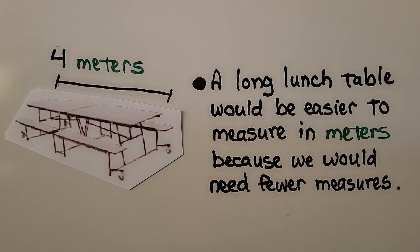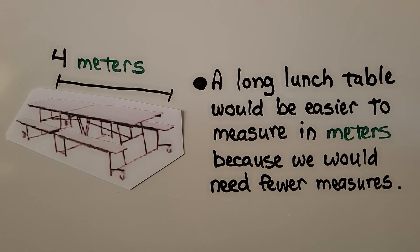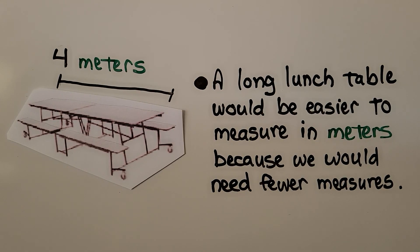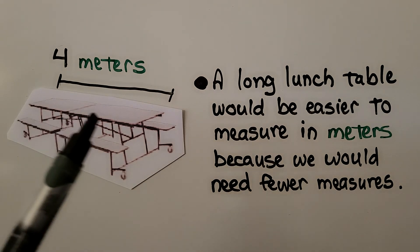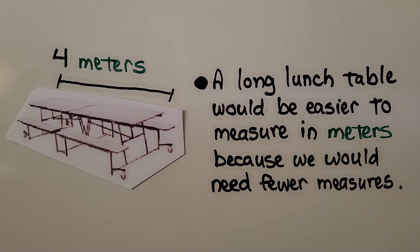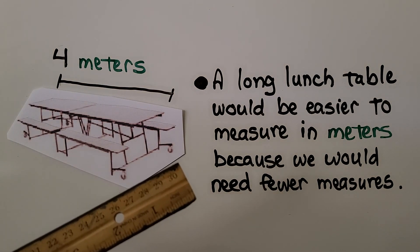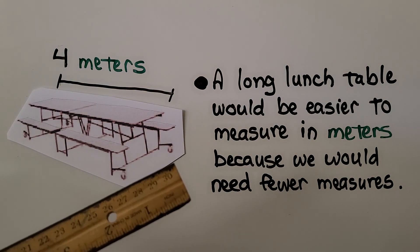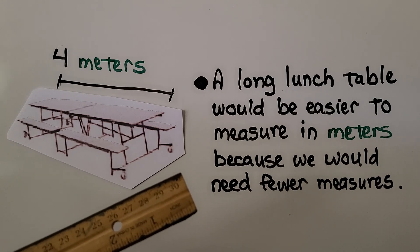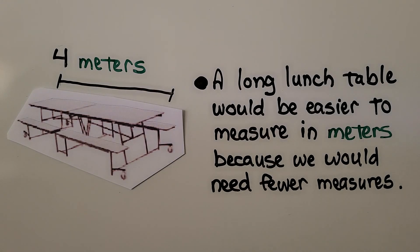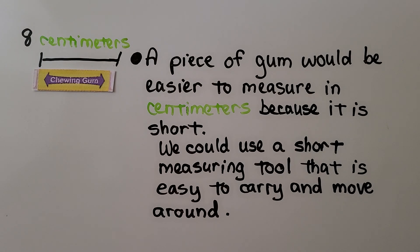A long lunch table would be easier to measure in meters because we would need fewer measures. We would just need about four meter sticks. My inch ruler is about 30 centimeters. If I used this to measure that long table, I would have to take a lot of measures. A piece of gum would be easier to measure in centimeters because it is short.